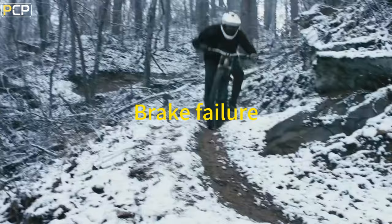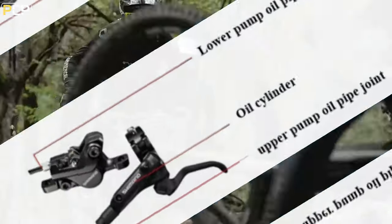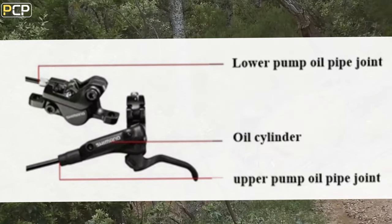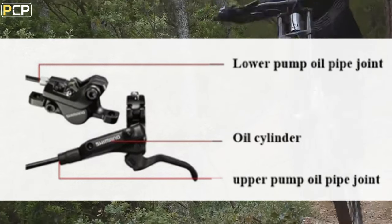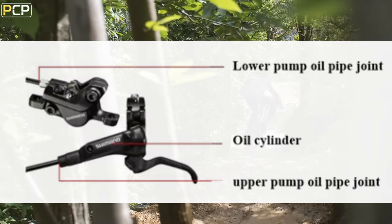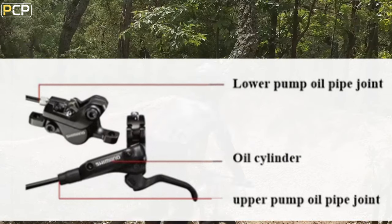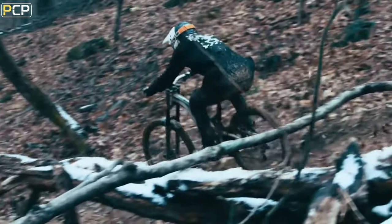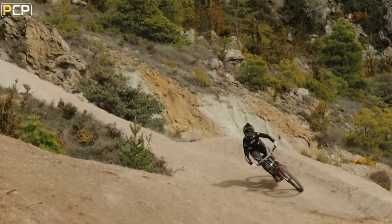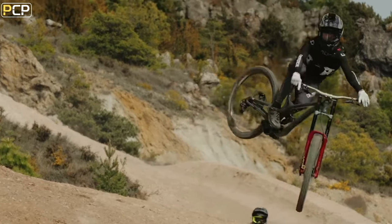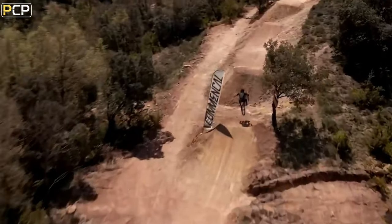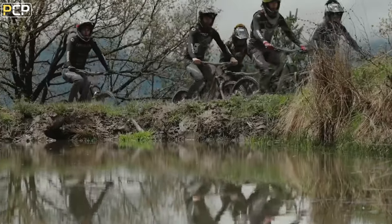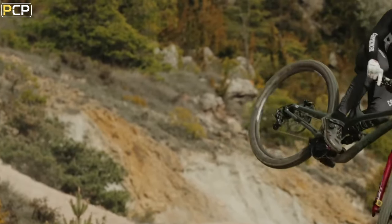Problem 3: Brake Failure. Check whether the discs and brake pads are worn or stained with oil. If the brake pads are worn, replace them in time. If the disc is stained with oil, wipe it with disc cleaner or alcohol, or polish it evenly with sandpaper. Problem 4: Check the oil supplement. If oil leaks from the cylinder or pipe, it is recommended to replace the brake system. If the problem is less serious — for example, the oil pipe is mixed with water and air causing the pad gap to become smaller and affecting the rebound — drain the oil and refill the pipe.